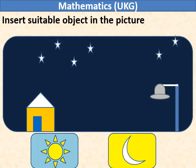Insert suitable object in the picture. It is a dark night. We can see the stars in the sky. So we will insert the moon in the sky.